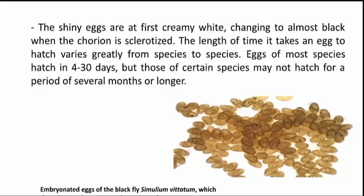The eggs are at first creamy white, changing to almost black when they are fertilized. The length of time it takes an egg to hatch varies from species to species. Eggs of most species hatch in 4 to 30 days, but those of certain species may not hatch for a period of several months or longer.